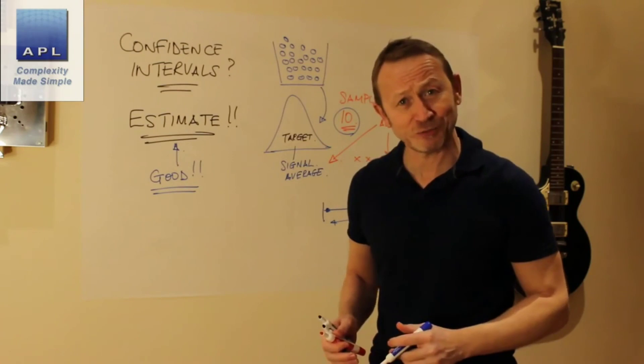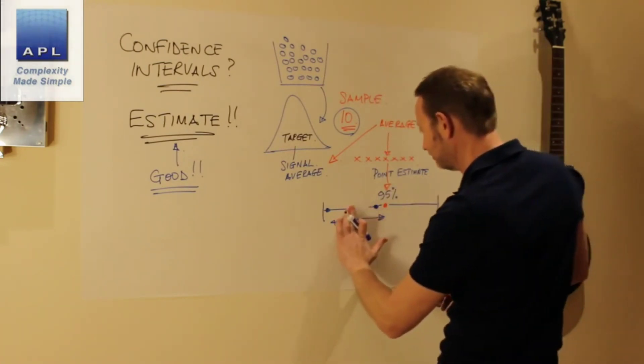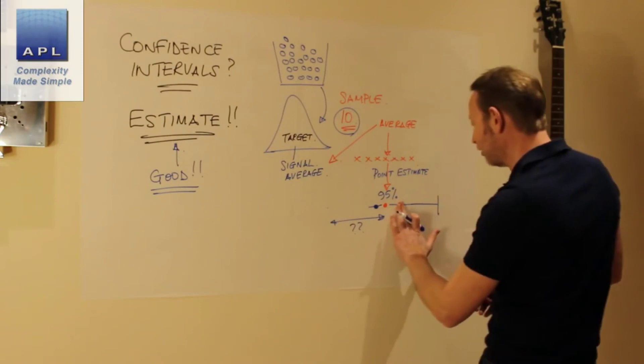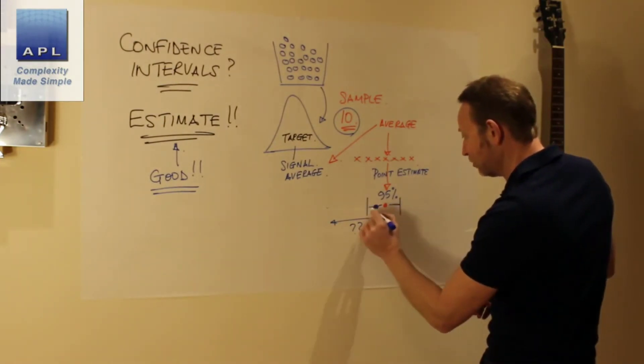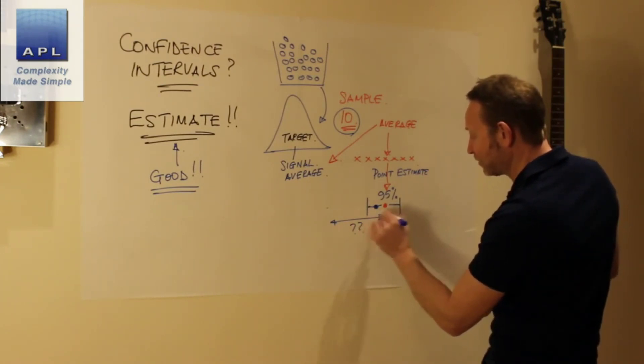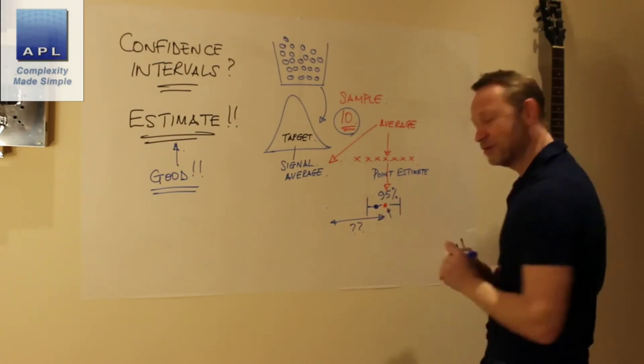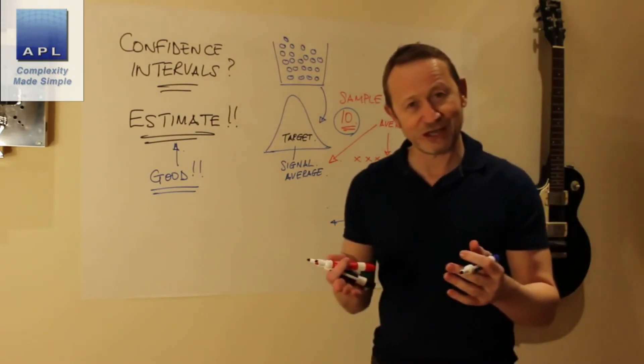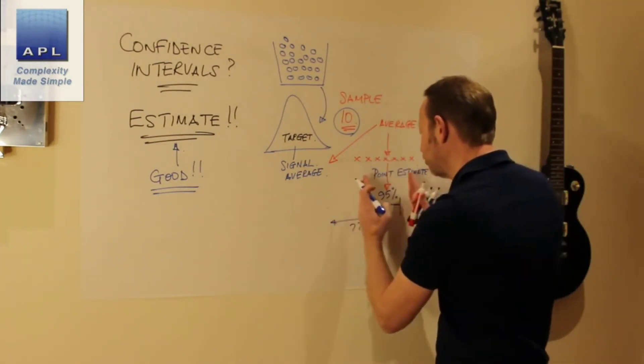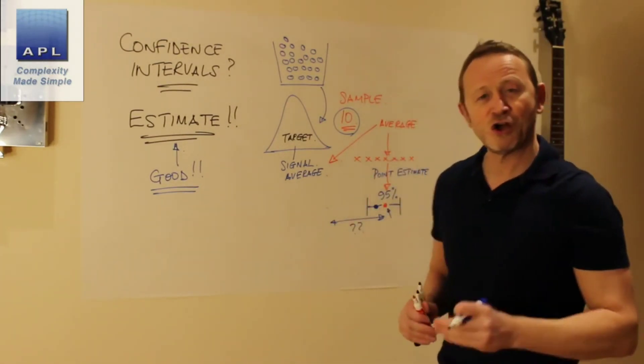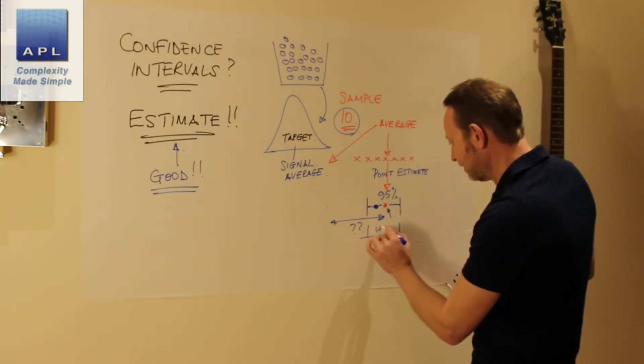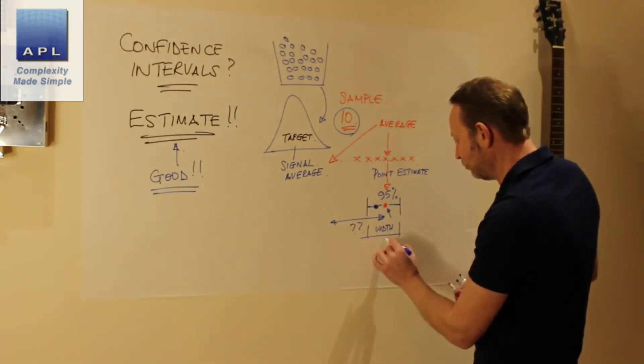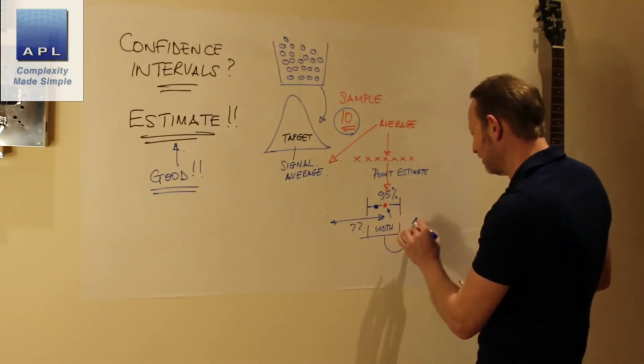What would be a much more sensible thing to do is this: to say, okay look, I would actually like my confidence interval to be nice and tight. I'd like it to be nice and close here, so that the possibility of where the true estimate is is very close to the estimate that I actually see. Now in order to get that nice tight confidence interval, what you really do is this: you specify this width in the maths, and you use that width to calculate a sensible sample size.